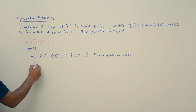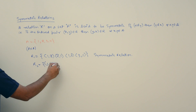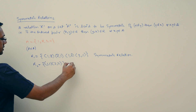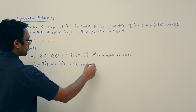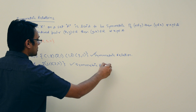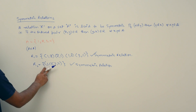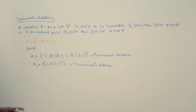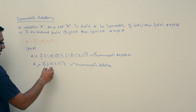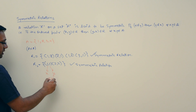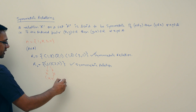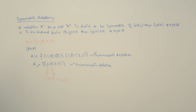If we have a relation R2 containing (1,1) and (2,2), this relation is also symmetric. Why? Because if we have (1,1), and this is represented as (x, y), then we also have (y, x), which is again (1,1). So this relation is also symmetric.